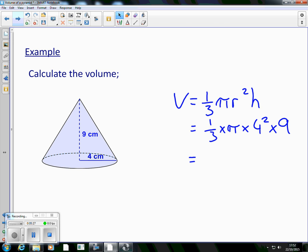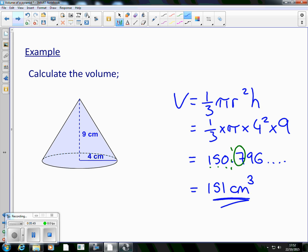Which gives you your big long answer, 150.796 and so on. Let's go 3 sig figs again. So 1, 2, 3 sig figs. The 7 after it will round it up. So my final answer is going to be 151. We're talking centimetres, so it's centimetres. 3 dimensions with volume, so 3 worth of centimetres to make it cubic centimetres.